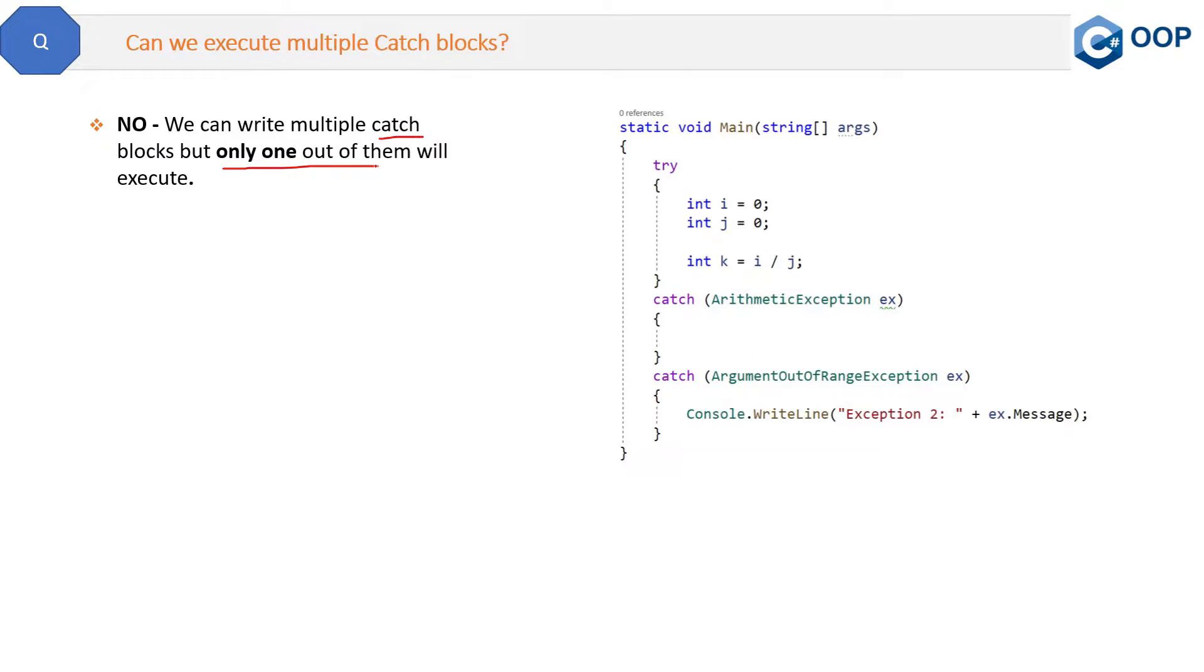Let me show you the code. Here you can see we have two catch blocks. Here is one and another is this one. So now this is a kind of arithmetic exception which will occur here, so it will go inside this catch block. So it will not go inside the another catch block.